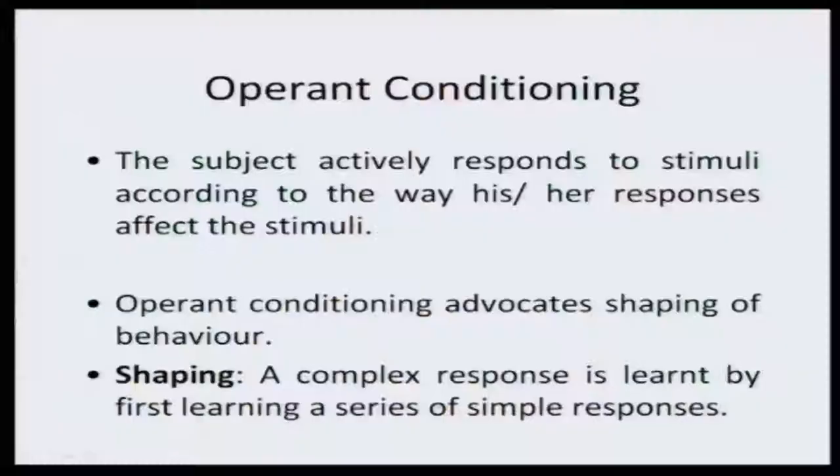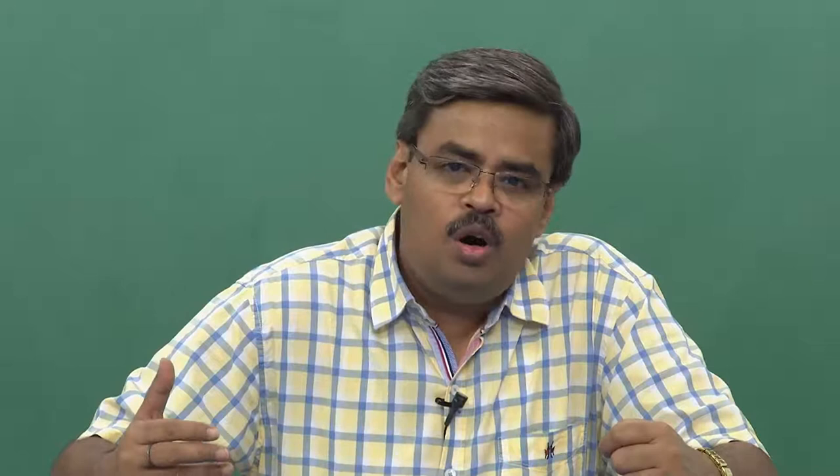In operant conditioning, the participants actively respond to stimuli according to the way their responses affect those stimuli. It will always look at how the organism is trying to escape punishment if the stimulus happens to be an aversive type, or the tendency of the subject to get rewarded for the behavior being produced. That is why operant conditioning is considered to advocate shaping of behavior — how your behavior gets shaped, dependent on receiving reward or skipping punishment.